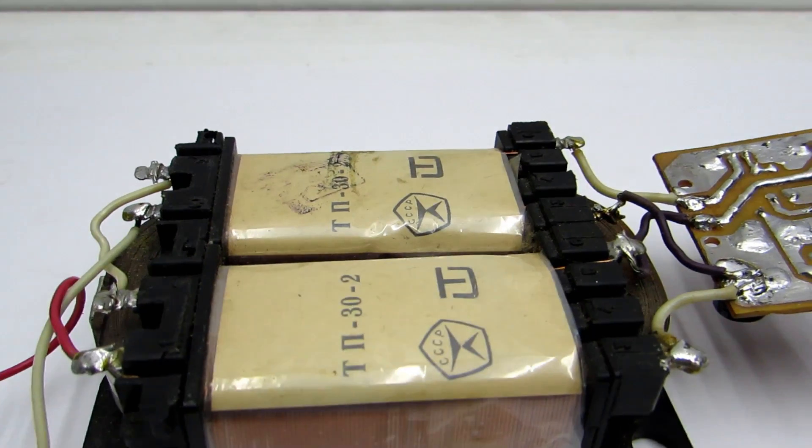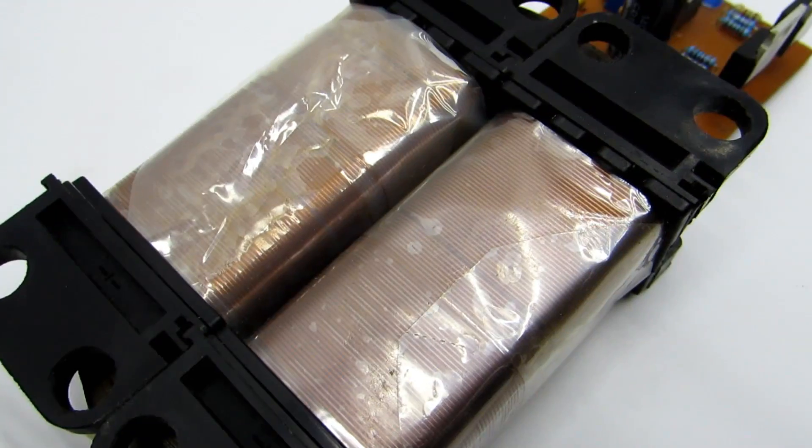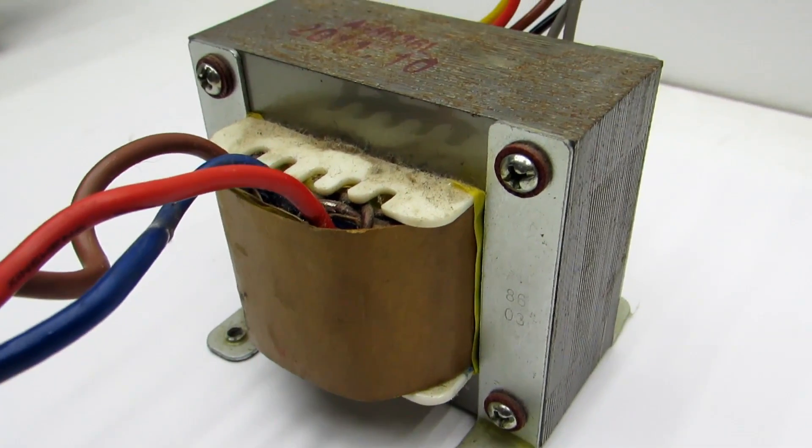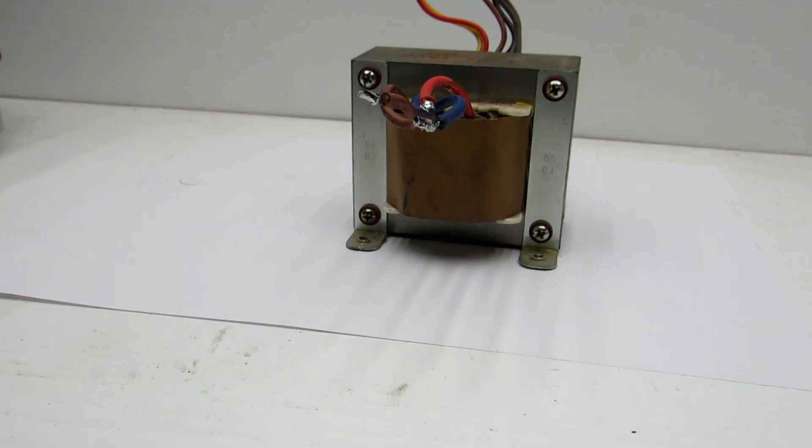Particular attention should be paid to the choice of transformer, since the diagram has no PWM control. Transistors are simply opened and closed. Power is not controlled. At first, I used the transformer from UPS, which has 8 volts in each arm.